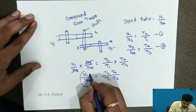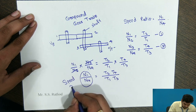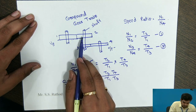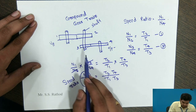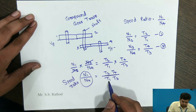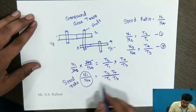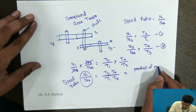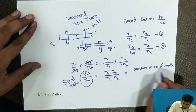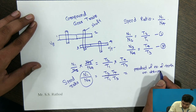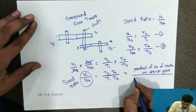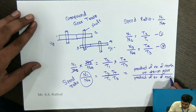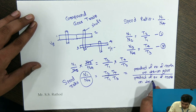This result is the speed ratio. The speed ratio equals the product of the number of teeth on the driven gears (T2 × T4) divided by the product of the number of teeth on the driving gears (T1 × T3).